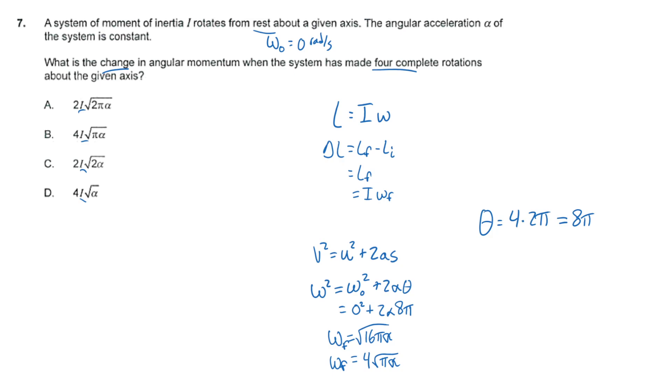So we take that and substitute it back in. So what we get is 4I times the square root of pi times alpha. So that is answer choice B.